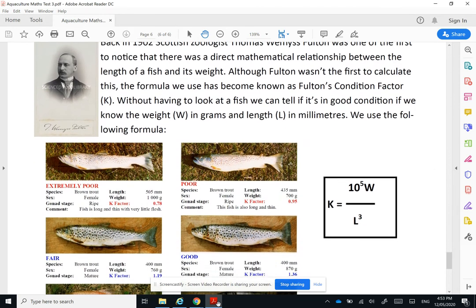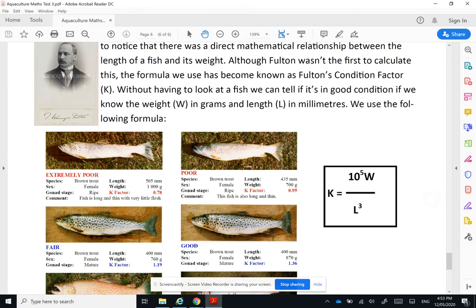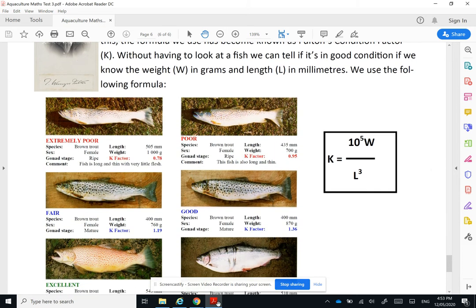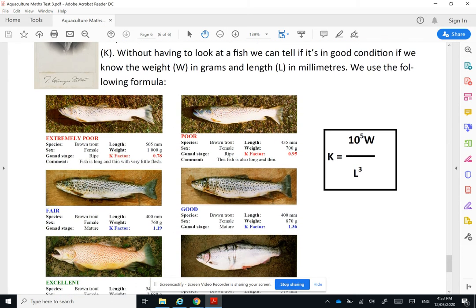So the condition factor is a relationship between weight in grams and length in millimetres. And we use this formula, K, which is K for condition, equals 10 to the 5 times W over length cubed.